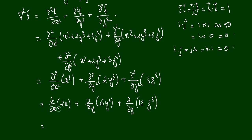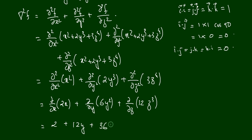Now taking the second derivatives: ∂/∂x of 2x = 2, plus ∂/∂y of 6y² = 12y, plus ∂/∂z of 12z³ = 36z². So the result is 2 + 12y + 36z².